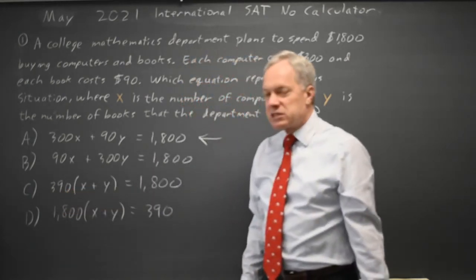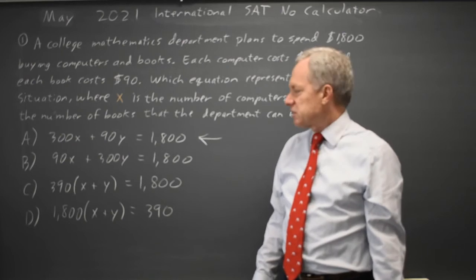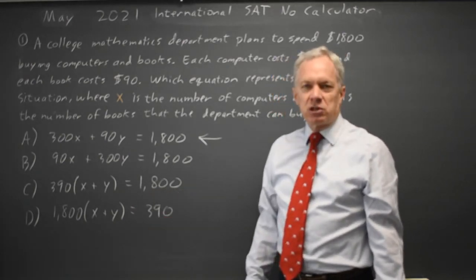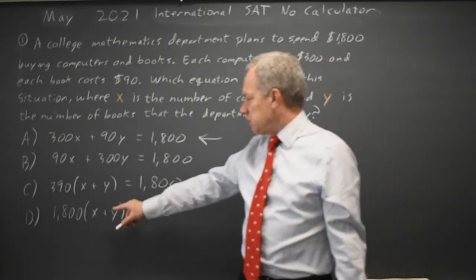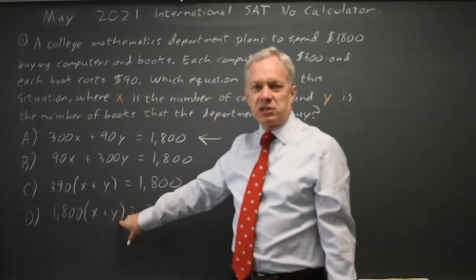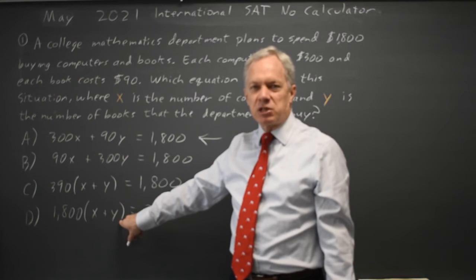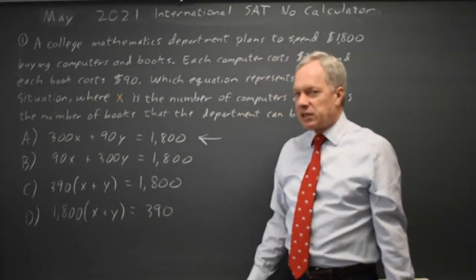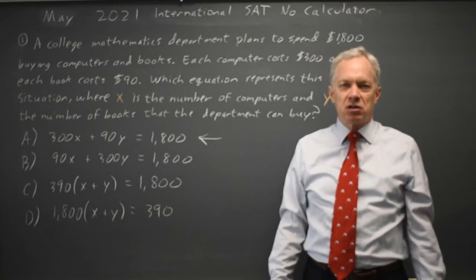by the total number of books and computers combined, which does not make sense. Choice D takes the sum of the number of books and computers combined and multiplies that by the total amount spent, which does not make sense. So choice A is the only answer here that makes sense. College Board often